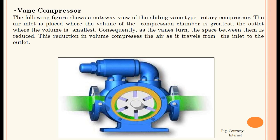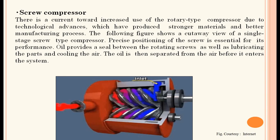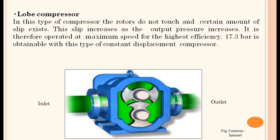A vane compressor is shown — it is a sliding vane type rotor compressor. The air inlet is placed where the volume of the compressor chamber is largest and the outlet where the volume is smallest. As the vanes turn, the space between them is reduced, compressing the air as it travels from inlet to outlet. Then the screw compressor and lobe type compressor are also covered.